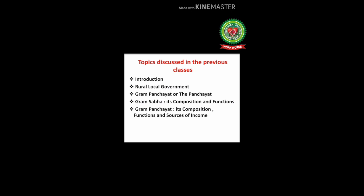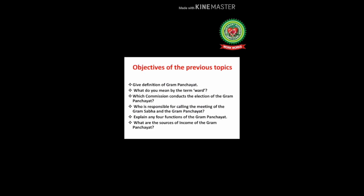The topics we already read in previous classes are: introduction, rural local government, Gram Panchayat, Gram Sabha — its composition and functions — and Gram Panchayat its composition, functions and sources of income. Before proceeding further I would like to ask some review questions: give the definition of Gram Panchayat; what do you mean by the term ward; which commission conducts the election of the Gram Panchayat; who is responsible for calling the meeting of the Gram Sabha and the Gram Panchayat; explain any four functions of the Gram Panchayat; and what are the sources of income of the Gram Panchayat.